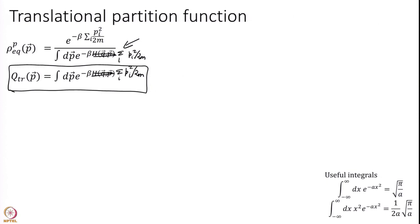So, the integral over dP vector is the same thing as the integral over dP_1, dP_2, all the way to dP_{3n}. Remember we have 3n momenta and 3n positions. Why 3n? n is the number of particles, and for each particle I have x, y, and z, so I have p_x, p_y, p_z for particle 1; p_x, p_y, p_z for particle 2, and so forth. So I have 3n momenta in total, and this is what I have to calculate.